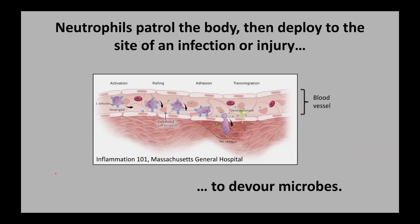Specialized phagocytes defend us against infections. Returning to the example of neutrophils, one way to think about it is that neutrophils patrol the body, tumbling along in our blood vessels 24/7, as depicted here — a cartoon of a blood vessel with a neutrophil tumbling along in the blood flow alongside red blood cells. They deploy to the site of an infection or injury to launch into phagocytosis and devour the microbes that they find there, shown here as a neutrophil squeezing out into the site of an injury or infection.